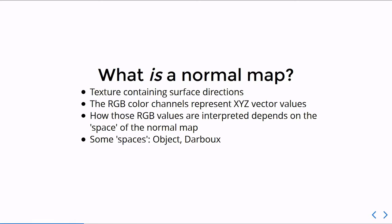The RGB values are interpreted instead as XYZ values, so a color of blue might be pointing one direction while the color of red might be pointing another. And there's different conventions. There's also different spaces that these normal maps can exist in.